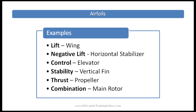Let's have a quick look at some examples of aerodynamic forces and their related airfoils. Lift — the most obvious one is an airplane wing producing lift. Negative lift, which is lift acting downwards — an example of that would be the horizontal stabilizer on the back of a helicopter.